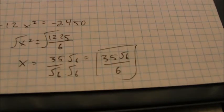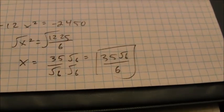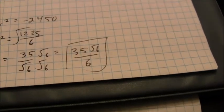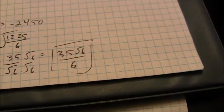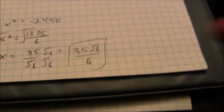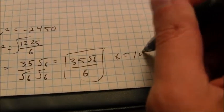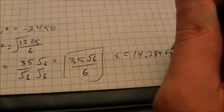And if I need to, I can substitute back in and find y. So, 35 radical 6, that is approximately, x is approximately 14.289 feet.